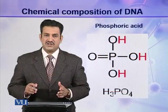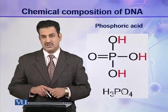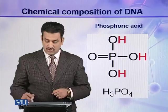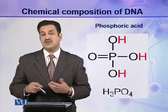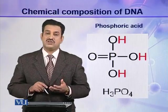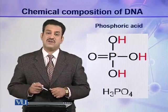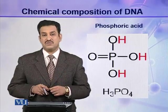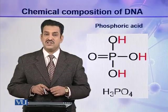The third component present in a deoxyribonucleotide is phosphoric acid. Phosphoric acid has three hydroxyl groups, so it can form three bonds with other molecules. All three components — deoxyribose sugar, a nitrogenous base, and phosphoric acid — combine together to make a deoxyribonucleotide, which is the building block of the DNA molecule.